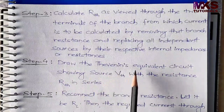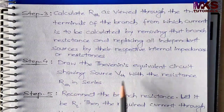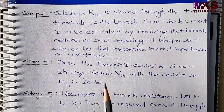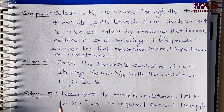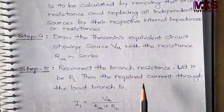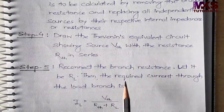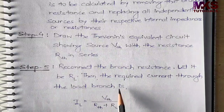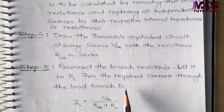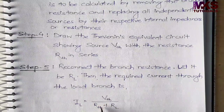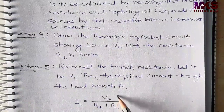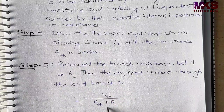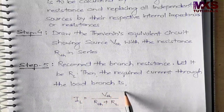Step 4 — Draw the Thevenin's equivalent circuit showing source VTH with the resistance RTH in series। Thevenin's equivalent circuit बनाएंगे जिसमें simply VTH और RTH show करेंगे। Step 5 — Reconnect the branch resistance। जो branch को initially remove किया था उसको उस circuit में जोड़ देंगे। Let it be RL, then the required current through the load branch is: IL = VTH / (RTH + RL).